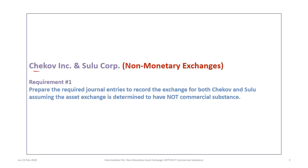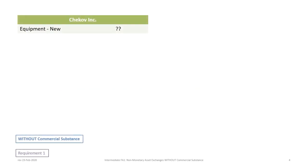Our example follows the Chekhov and Sulu Corp example on non-monetary exchanges, so please make sure you download the correct file to follow along. Our first requirement is preparing the required journal entries to record the exchange for both parties — Chekhov and Sulu — assuming the asset exchange is determined to not have commercial substance. We will begin with Chekhov, and what we're looking to do is start our journal entries with a debit.